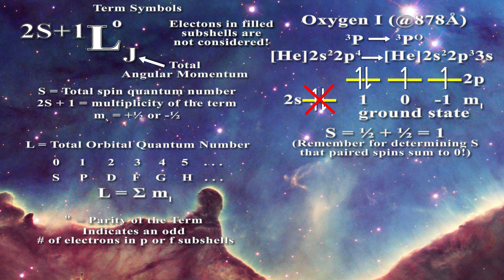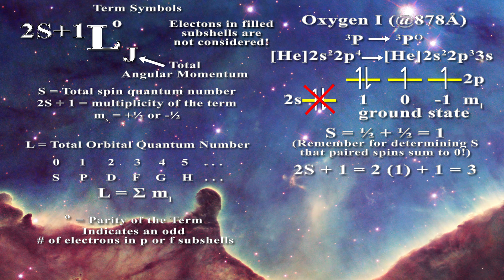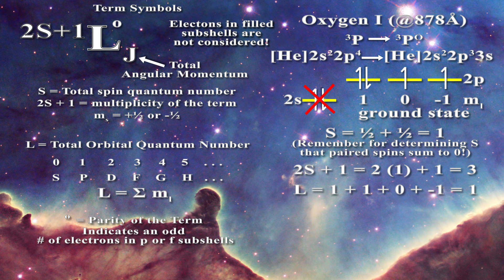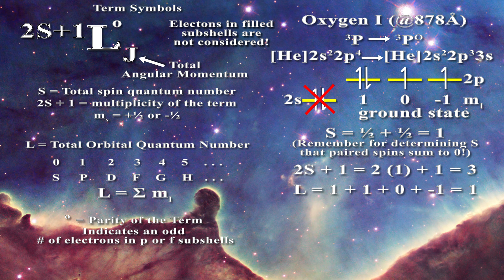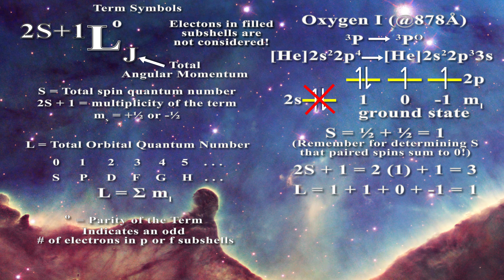The S value is the sum of the individual spins, which in this case is one half plus one half, equal to one. The multiplicity is given by 2S + 1 and is therefore equal to three — we have a triplet state. The total orbital quantum number is determined by summing the m sub l values: one plus one plus zero plus minus one, which equals one. So the term symbol must be denoted by the letter P, corresponding to a value of one.